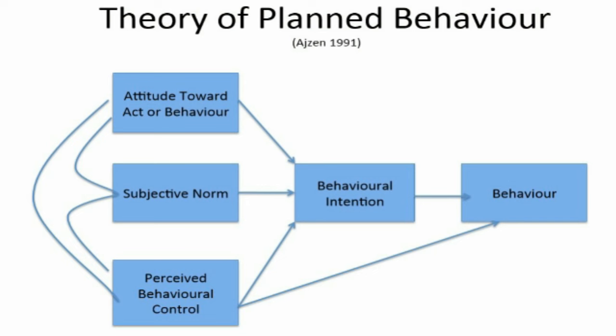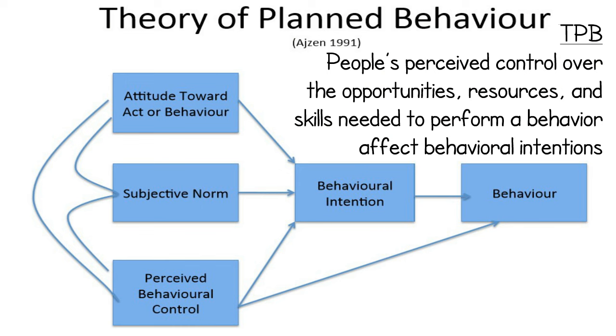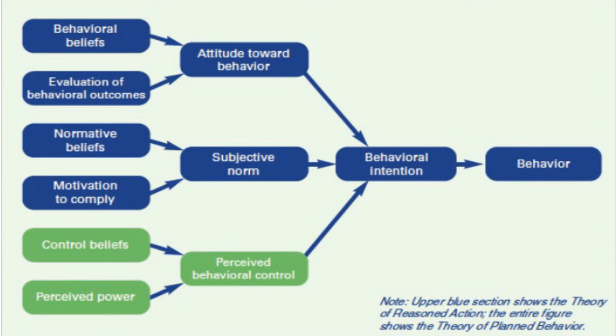The theory of planned behaviour is differentiated from the theory of reasoned action by its additional dimension of perceived behavioural control. It has been suggested that the additional constructs within the theory of planned behaviour allow it to predict a greater percentage of overall behavioural variance than the health belief model and the theory of reasoned action. People's perceived control over the opportunities, resources and skills needed to perform a behaviour affect behavioural intentions. The most key areas these models have been applied to are exercise intentions and behaviours, weight gain prevention and eating behaviour, addiction-related behaviours such as smoking and alcohol abuse, and HIV prevention and condom use.